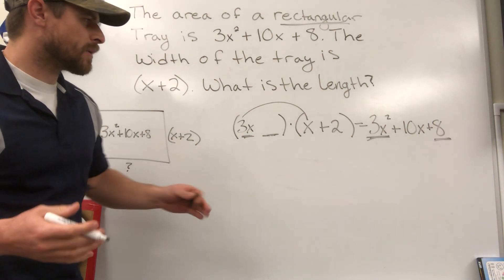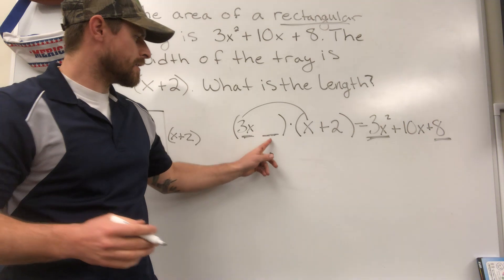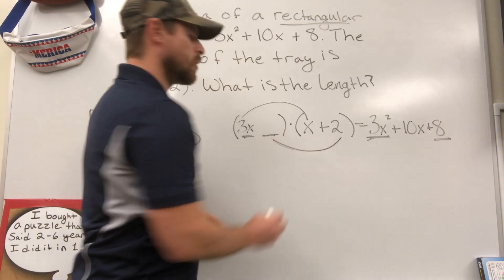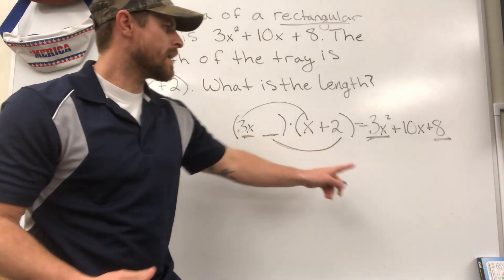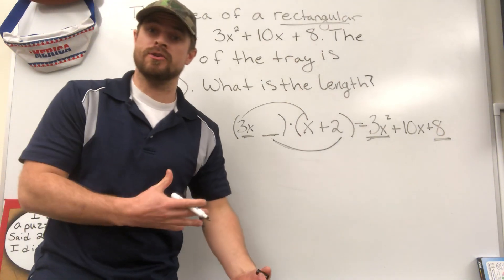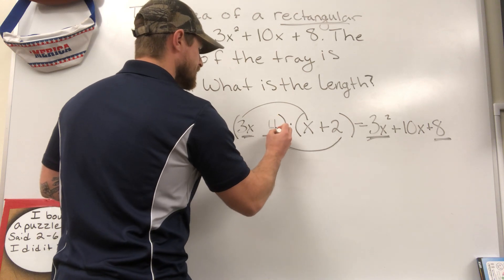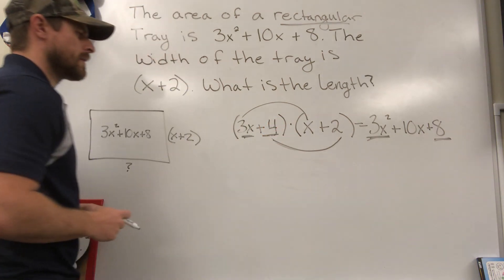Now the second part comes from this 8. Something here, when I multiply my last, remember FOIL, F-O-I-L, last terms, when I multiply these two parts, I'm going to get 8. What number times 2 is going to make an 8? That's right, it's got to be a positive 4. So we're going to say plus 4.